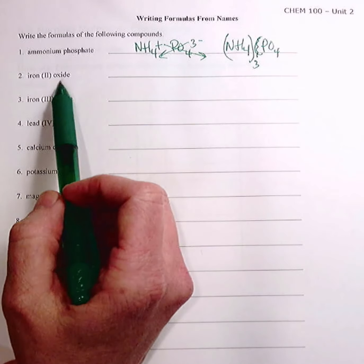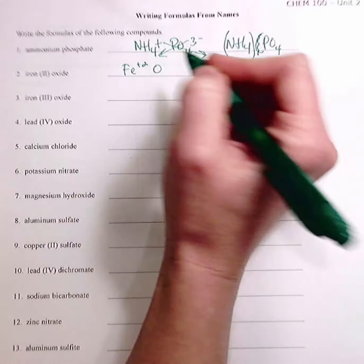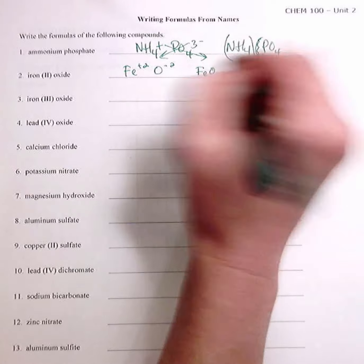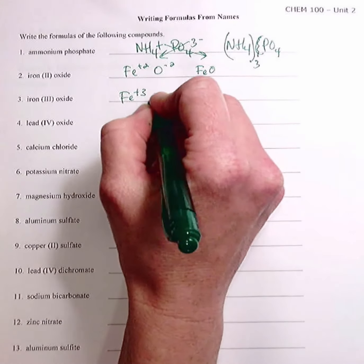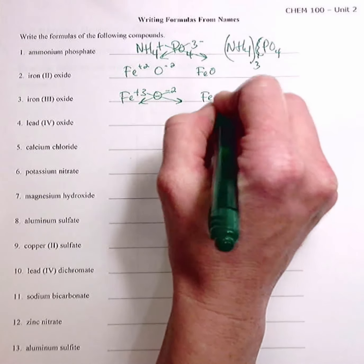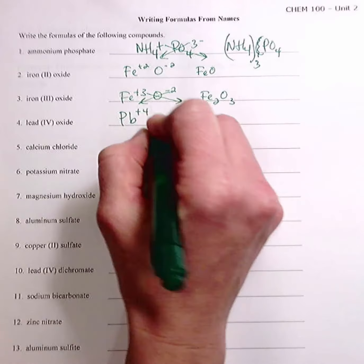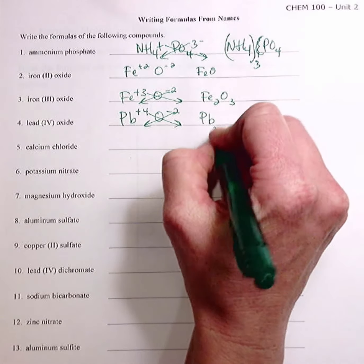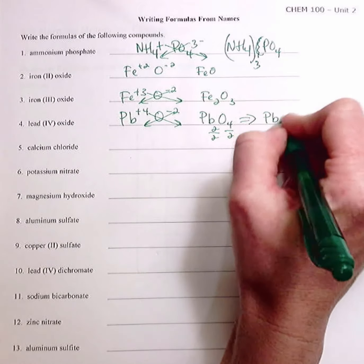All right, iron two oxide, Fe plus two, O minus two, so it would be FeO. Iron three oxide would be Fe2O3. Lead four oxide, Pb plus four, O minus two, would be Pb2O4, which would simplify to PbO2.